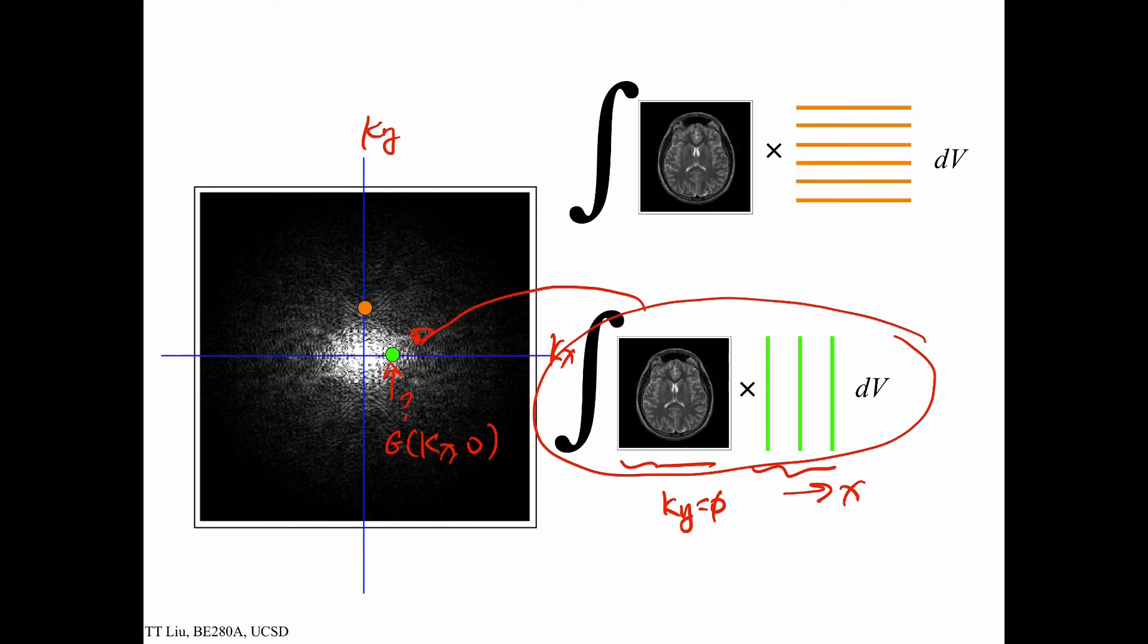Similarly, if we're here, we want to figure out the value of some k-space value G(0, ky), because now we're along the ky axis and kx equals 0. And remember, when kx equals 0, that means there's no variation in the x direction. There's only variation in the y direction. And so we're looking at sines and cosines that have this pattern. So we take this pattern, we multiply it by our object, and then we take that multiplication, integrate over all of space, and then take that and plug it in as our k-space value.